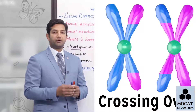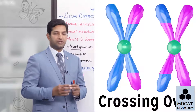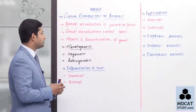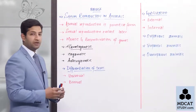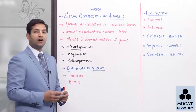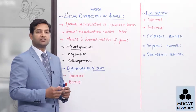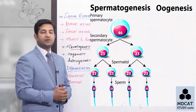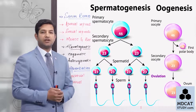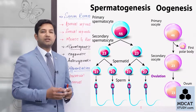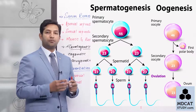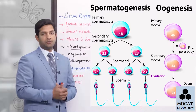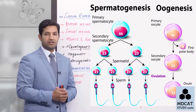Another important thing to include in this topic is gametogenesis itself — how sexual reproduction is dependent on gamete formation. In more primitive organisms, only one type of gamete was produced.